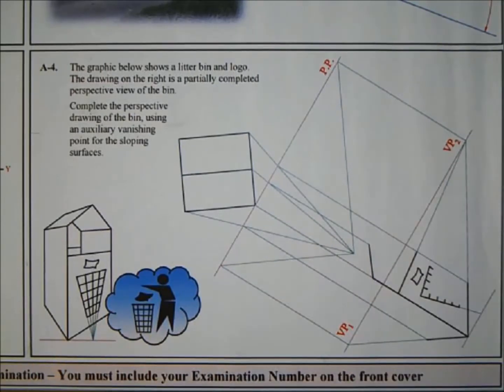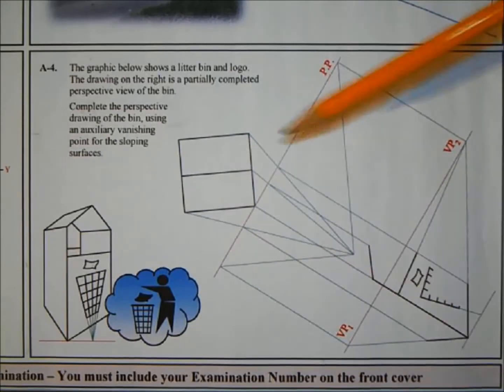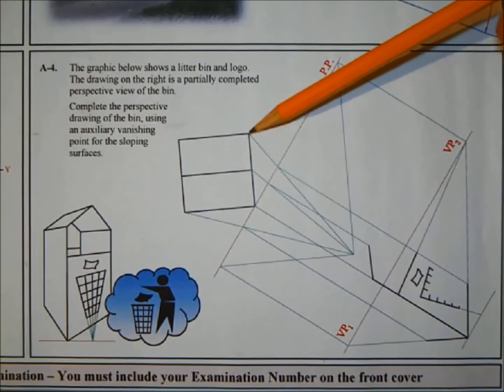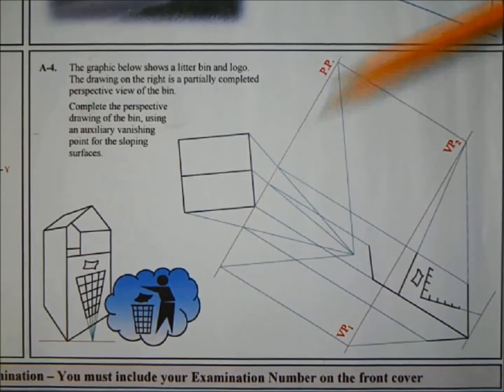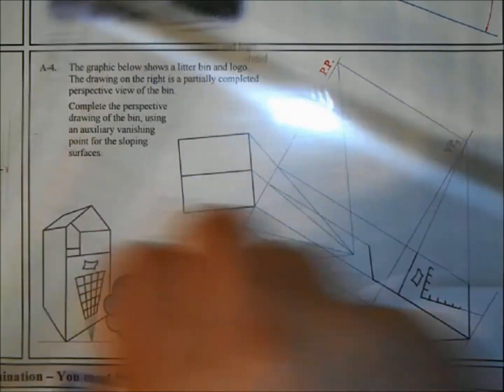The drawing on the right is a partially completed perspective view of the bin. Complete the perspective drawing of the bin using an auxiliary vanishing point for the sloping surfaces. All they're giving us here is the plan and our picture plane going through that point there and then our two vanishing points.